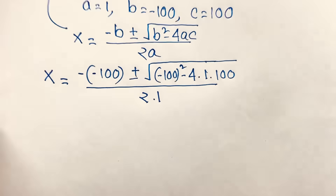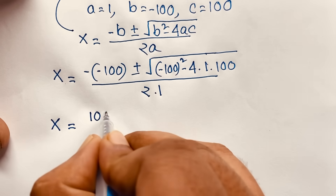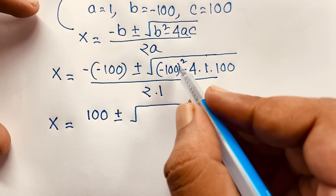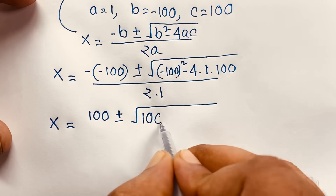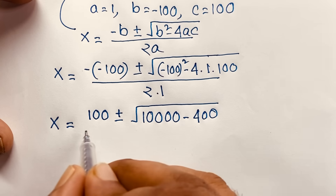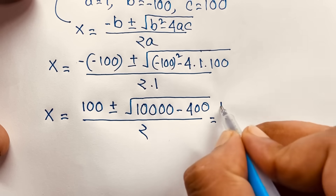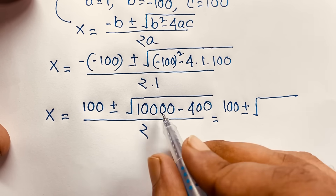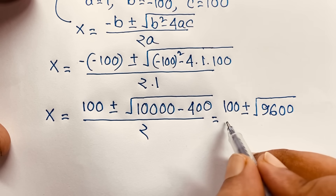Then, you can see x is positive 100 — minus minus is positive — plus or minus square root of 100 squared. Since the power is an even number, it is always positive, so it will be 10,000 minus 4 times 100, which is 400, over 2 times 1, which is 2. That gives us x equals 100 plus or minus square root of (10,000 minus 400), which is 9,600, over 2.